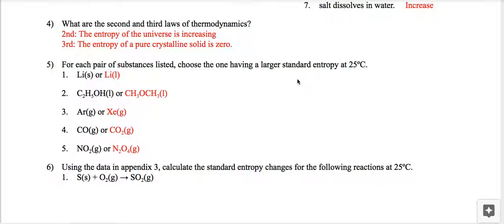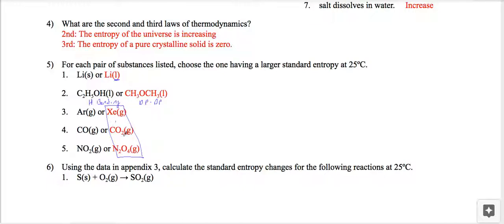To identify which substance has the larger standard entropy: lithium as a liquid is larger than as a solid. For intermolecular forces, hydrogen bonding is stronger than dipole-dipole, meaning more ordered and lower entropy. When all substances have the same intermolecular force — dispersion — we look at molecular mass. Larger molecular mass means larger polarizability, more possible microstates, and greater disorder.